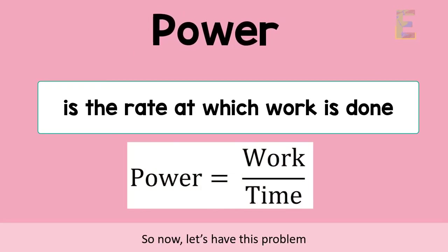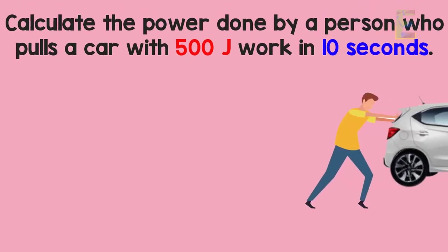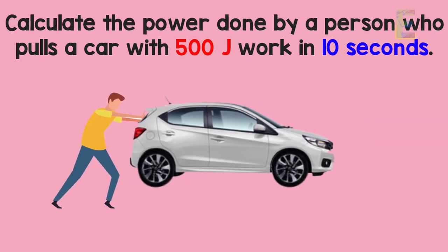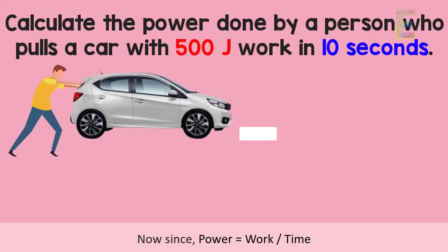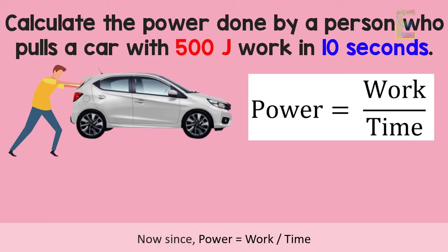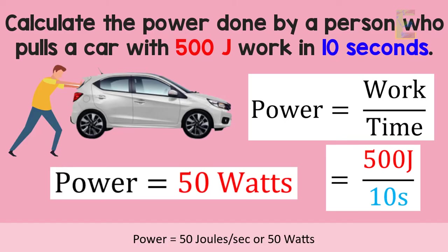Now let's have this problem. Calculate the power done by a person who pulls a car with 500 joules of work in 10 seconds. Since power is equal to work over time, we have power equal to 500 joules over 10 seconds, which gives us the final answer of 50 joules per second, or 50 watts.